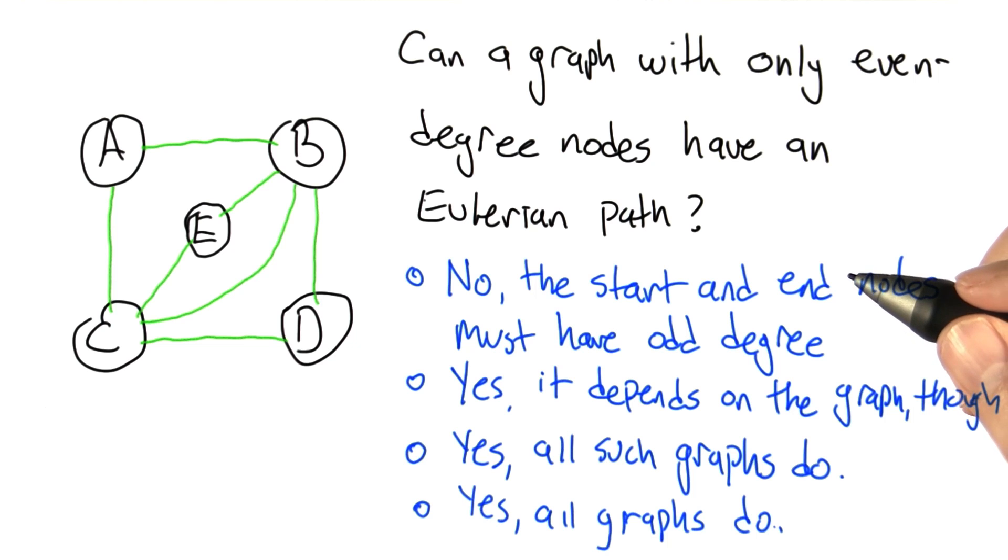And another possible answer is yes, because all graphs do. You can't really have a graph that doesn't have an Eulerian path.